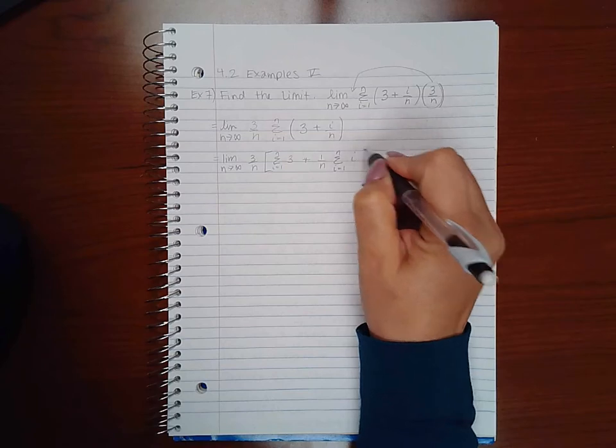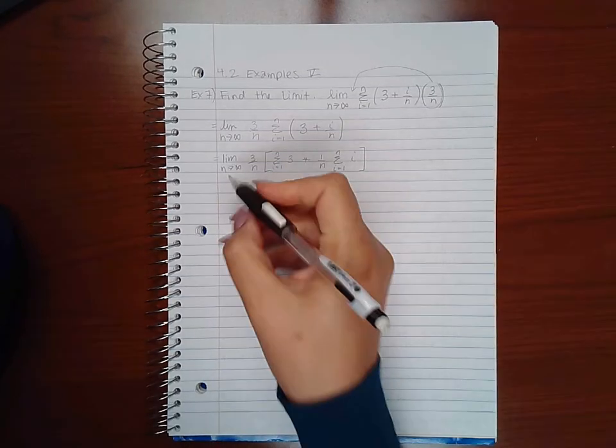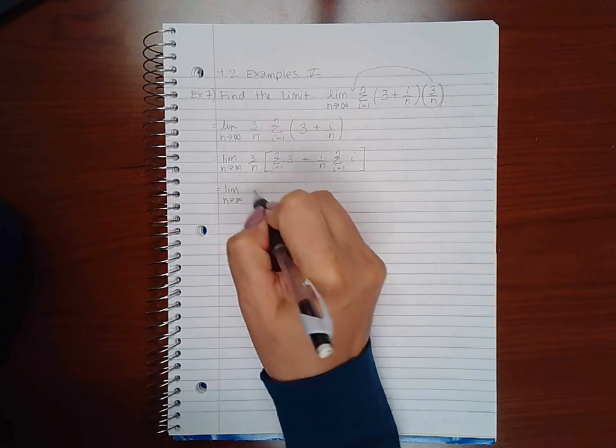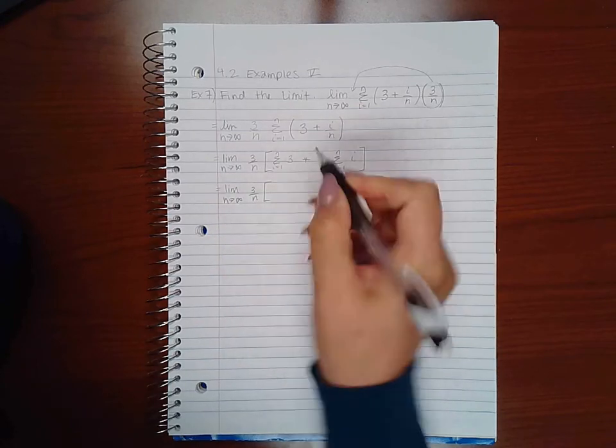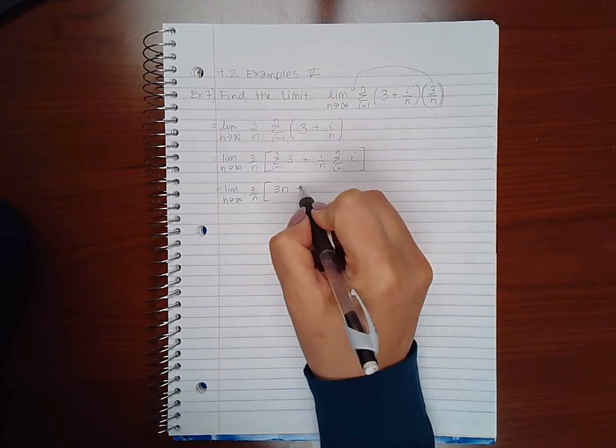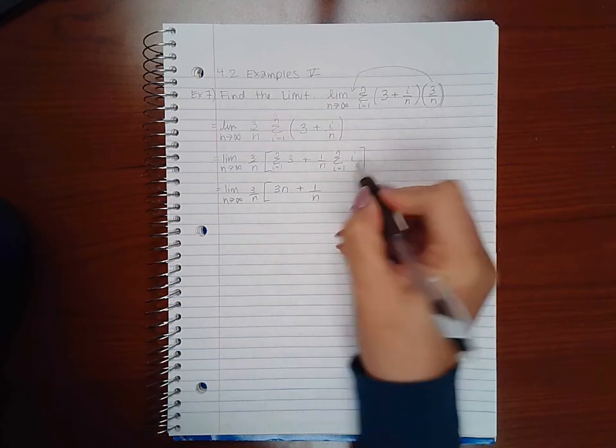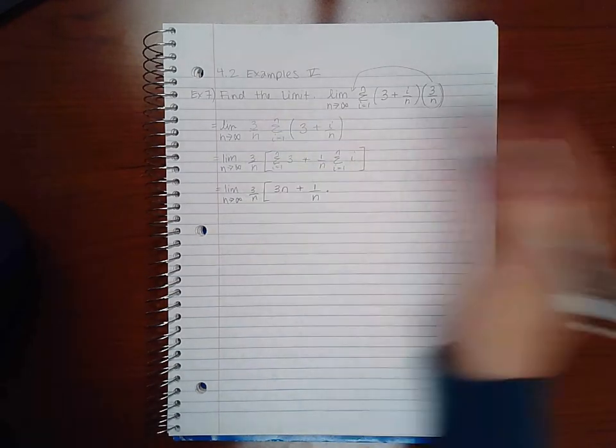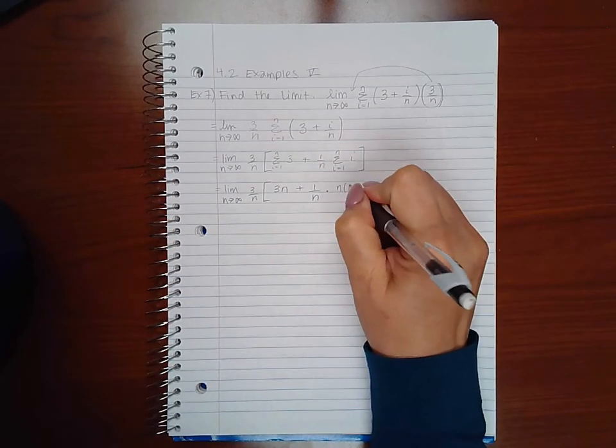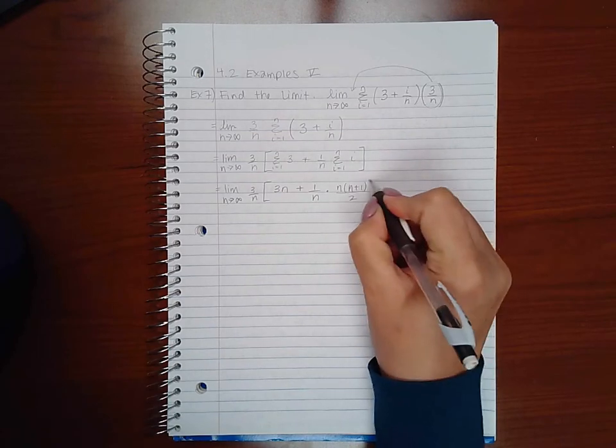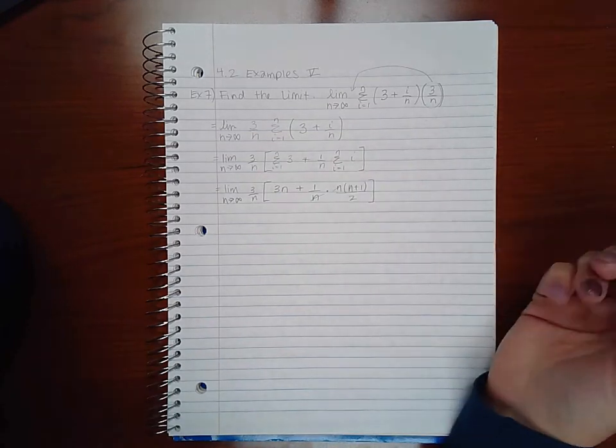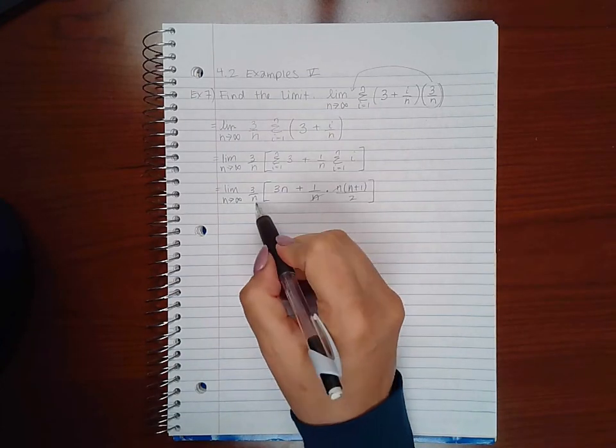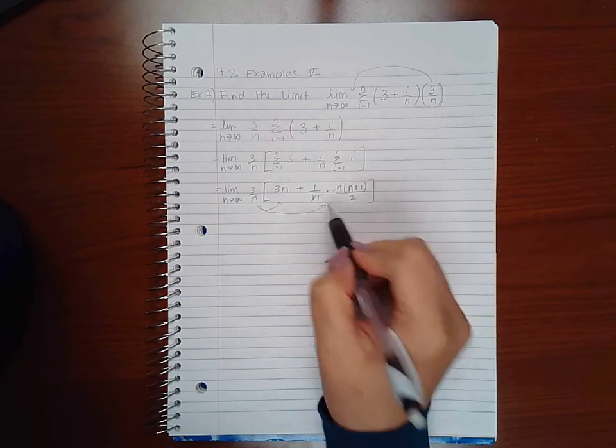So I'm going to use my formulas and the formula for 3 is just for a constant is just 3 times N. The formula for I is going to be N times N plus 1 over 2. So these N's will cancel and I will go ahead and distribute this 3 over N to each of those two terms.